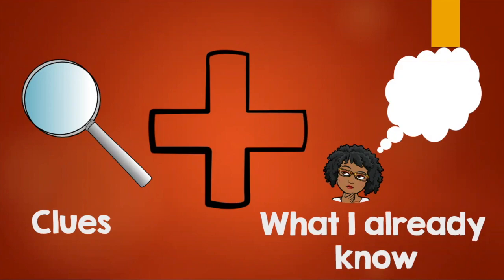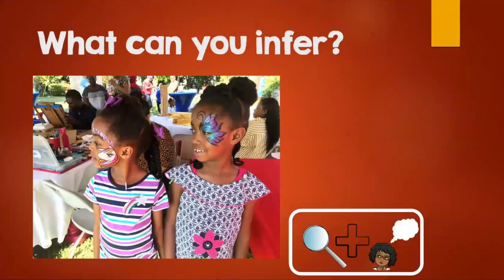Now you try some on your own. Remember to think about the clues and what you already know. Look at this picture — what can you infer? Did you come up with your inference? That's right, the girls are at a party. You did a good job. You see that they had their faces painted, there's someone in the corner with food, there are drinks on the table, and people are walking around and playing. Awesome job making a good inference — you used your clues as well as what you already know to infer that the girls are at a party.